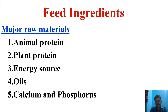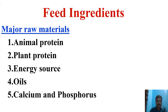Second one is the plant protein, which comes from soya DOC, rapeseed meal, cotton DOC, and like that. Third one is the energy source — without energy, animal performance is not at all possible. Fourth one is oil; there are two different types: vegetable oil and plant origin oil. Then calcium and phosphorus, which are very important for bone development, exoskeleton development, and shrimp molting. These are the crucial parameters under major raw materials.